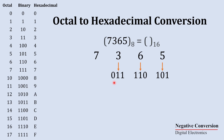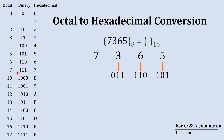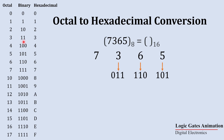The reason is: whenever we represent any single digit octal number in binary, we always represent it in a three-digit manner. The largest octal number is seven, and that can be represented using three-digit binary. So to maintain symmetry, we always represent the binary equivalent of octal in three digits. That is why we add a leading zero — so 011 is the three-digit binary equivalent to octal three.